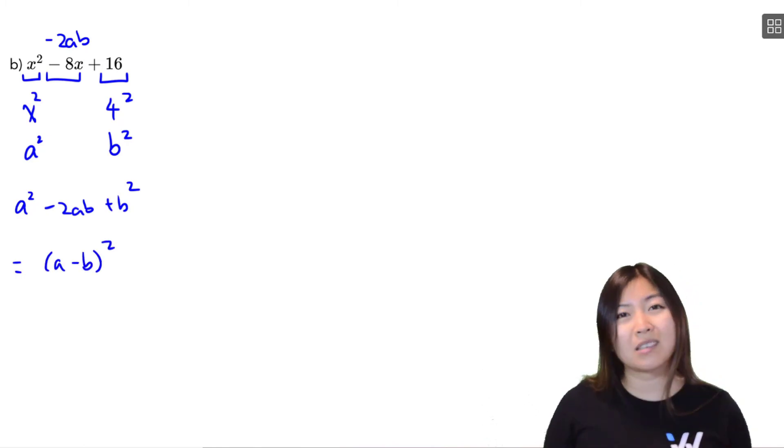So again, you could factor this like a simple trinomial, nothing wrong with that. But if you're able to recognize that this is a perfect square trinomial, then you can use the shortcut. This is just going to be a minus b all squared. So that is x minus 4 all squared.